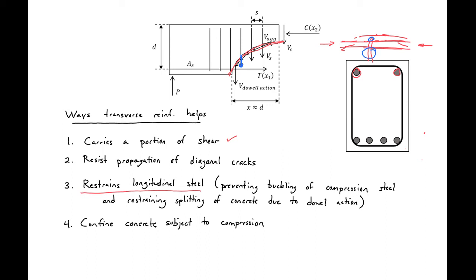It also restrains splitting of the concrete due to dowel action. As I said when talking about the concrete contributions to shear, we had this dowel action. Our shear due to dowel action is going to be resisted by our longitudinal steel and the concrete immediately under that longitudinal steel.